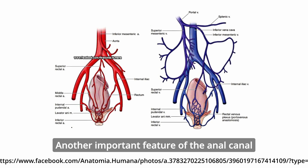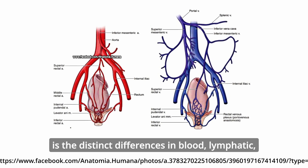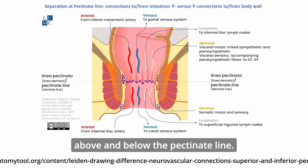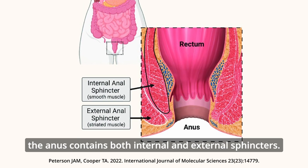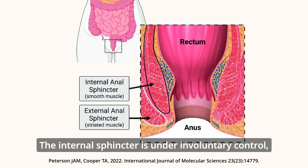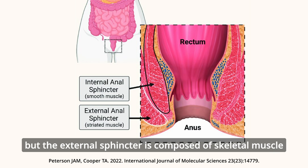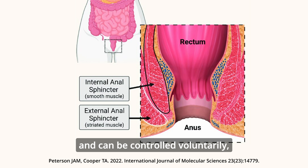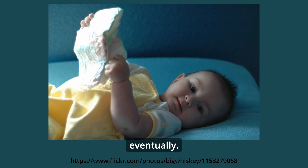Another important feature of the anal canal is the distinct differences in blood, lymphatic, and nervous supply above and below the pectinate line. Importantly, the anus contains both internal and external sphincters. The internal sphincter is under involuntary control, but the external sphincter is composed of skeletal muscle and can be controlled voluntarily — eventually.